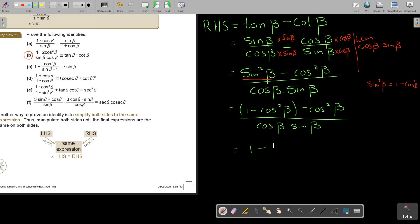If you compare, you see there. 1 minus 2 cos squared beta over sin beta cos beta. Doesn't matter that or that. So therefore, the right-hand side is equal to the left-hand side.